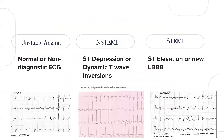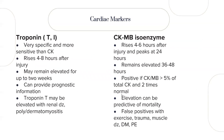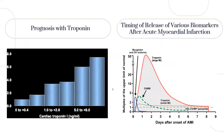On ECG, you may find ST depression or ST elevation. Troponin is a very specific cardiac marker providing good prognostic information, while CKMB is less specific but may be detected earlier than troponin. The higher the troponin level, the worse the prognosis. Myoglobin and CK isoforms rise earlier than troponin.